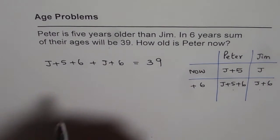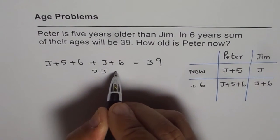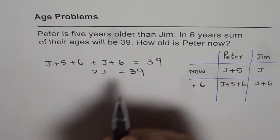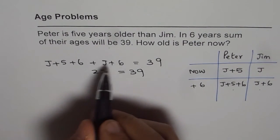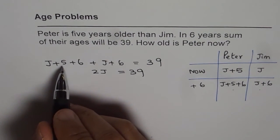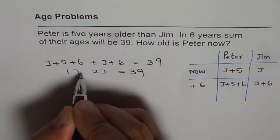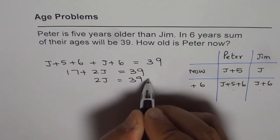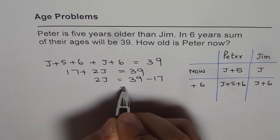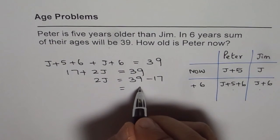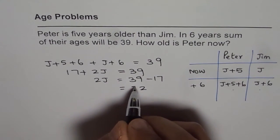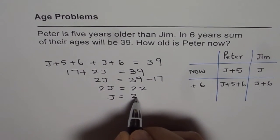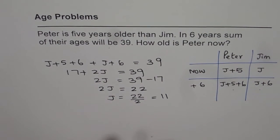Solving, we get J plus J as 2J. So 2J equals 39. For the constants: 6 plus 6 is 12, and 12 plus 5 is 17. So 2J equals 39 minus 17, which is 22. Therefore J equals 22 divided by 2, which is 11.